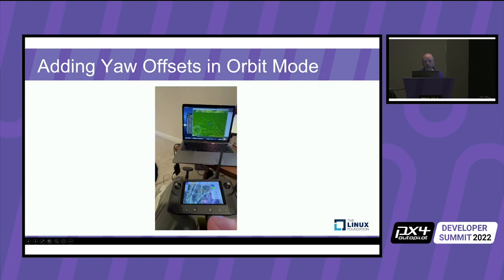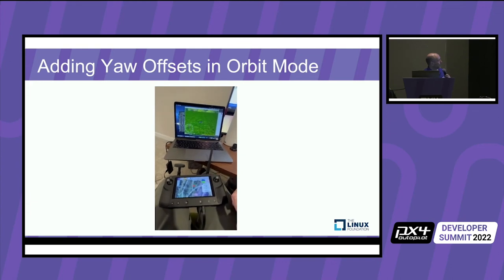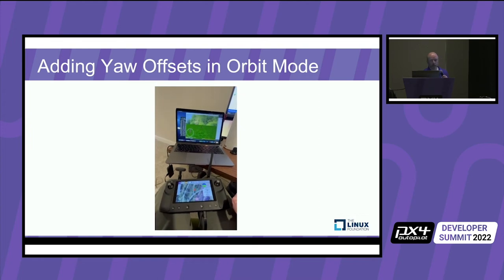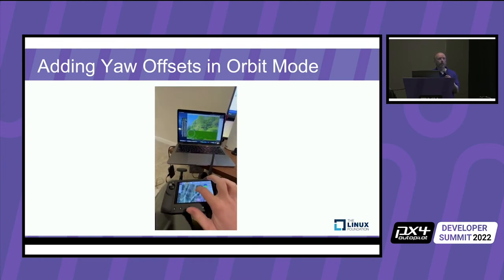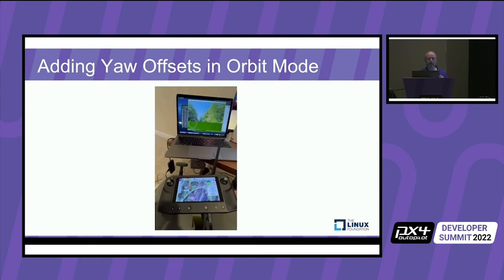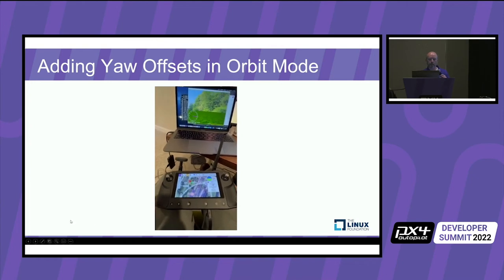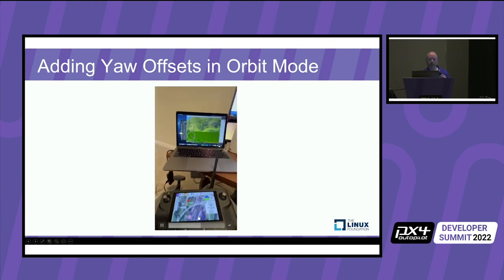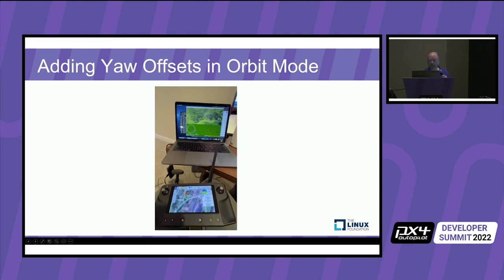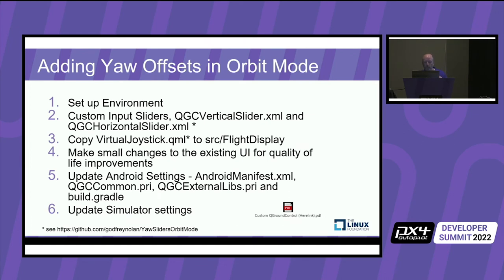You can see the HereLink there, arming the drone — it's connected to the simulator, which is Gazebo running in the background. We learned a lot doing this. A Linux computer is definitely the way to go if you're trying to get this to work. We did get it working on Mac; Windows didn't have a lot of success over the period of time we tried to configure everything. If you're going to be doing any modifications to QGroundControl, the recommendation is definitely to use a Linux box.